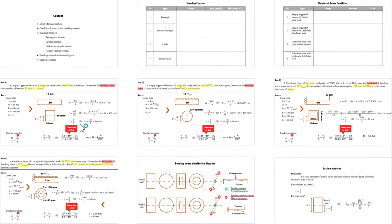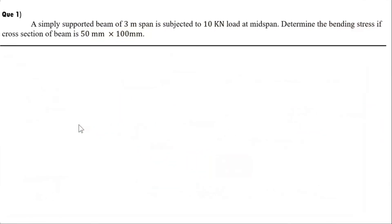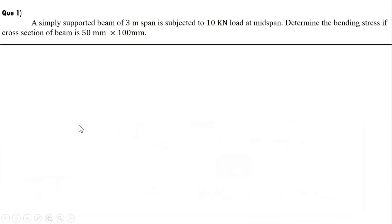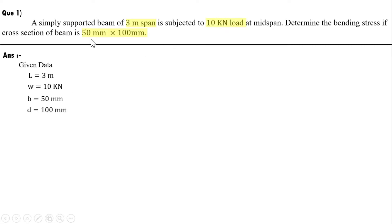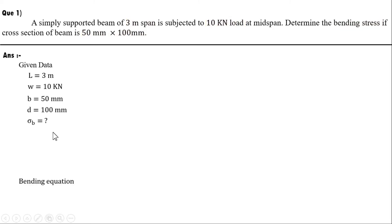Let us solve problems based on standard sections and beam conditions. Problem 1: a simply supported beam of span 3 meters is subjected to a 10 kN central point load. The cross section is 50 mm × 100 mm. Determine the bending stress. The bending equation is M/I = σ_b/y, so we need M, I, and y.